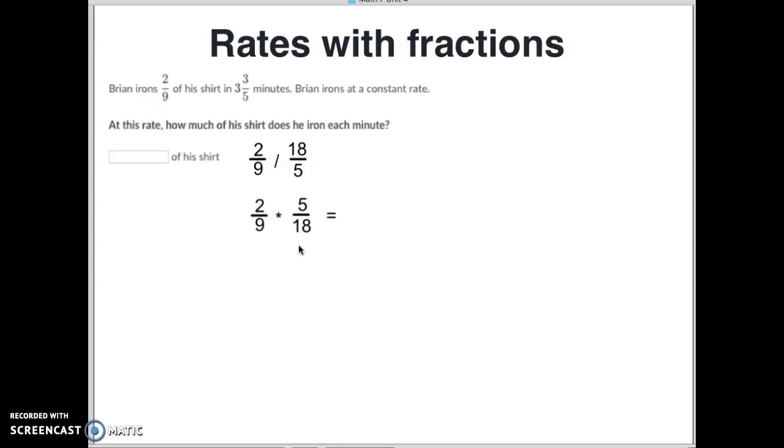If you remember, multiplying fractions is no problem. First, you multiply the tops, then you multiply the bottoms. So when we multiply the tops, we get ten. When we multiply the bottoms, we get 162. Then we've got to look, can we simplify that? And yes, in this case we can. So that comes out to be five over eighty-one. So, he can iron five eighty-firsts of a shirt every minute.